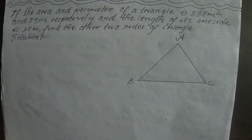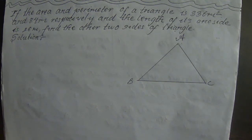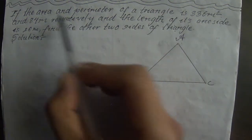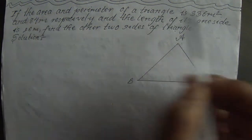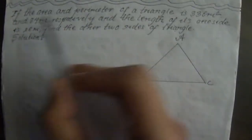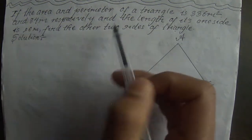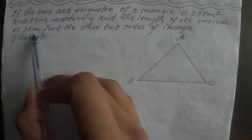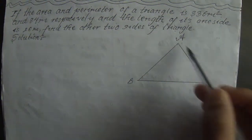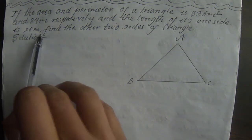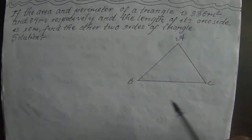If the area and perimeter of a triangle are 336 m² and 84 m respectively, and the length of one side is 26 m, find the other two sides of the triangle.